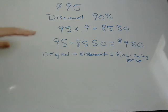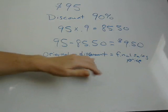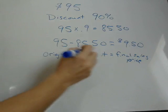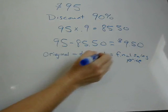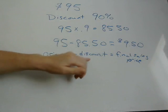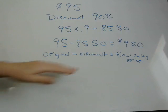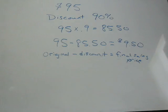Remember when we marked it up, we had the original plus the markup. Here we have the original minus the discount. So that kind of makes sense — you're going to add the markup, and you're going to subtract the discount, in order to get the final sales price.